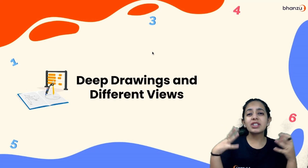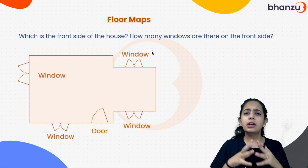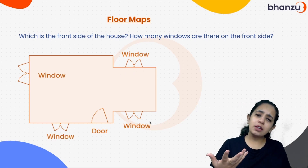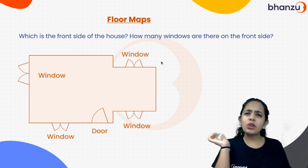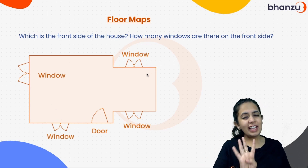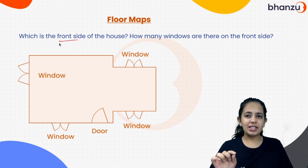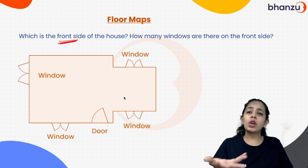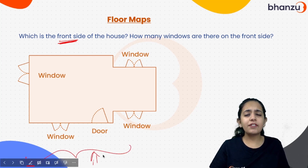For example, this one is a floor map of a home. Here we have windows — there's a window, a door, and more windows. So there are four windows and one door in total. What do you think is the front side of this house? Obviously it's the one with the door — if there's no door, how will guests enter? So that is the front view.